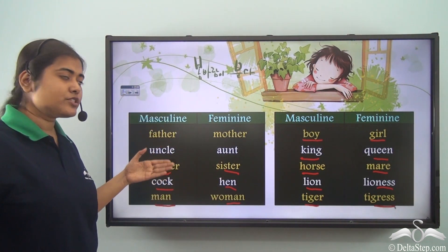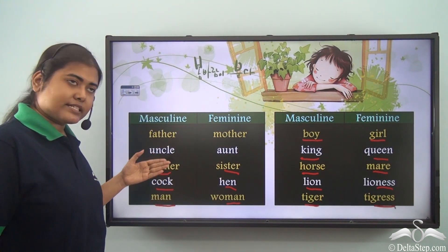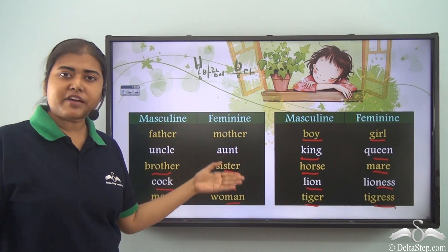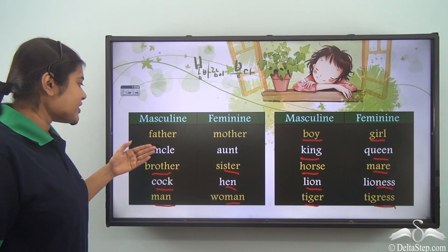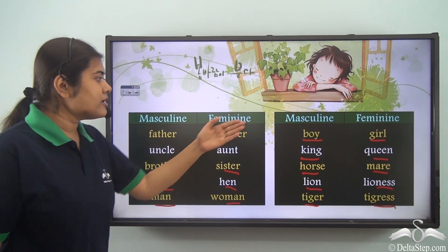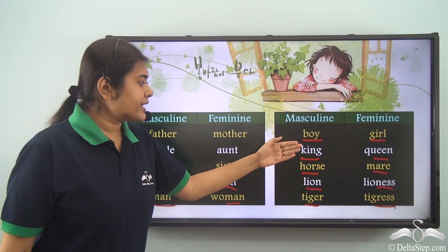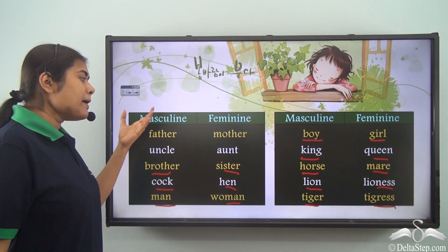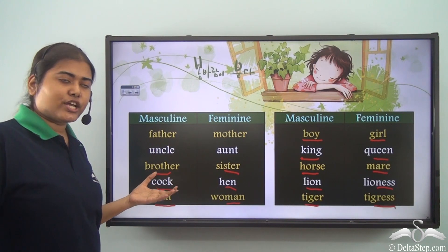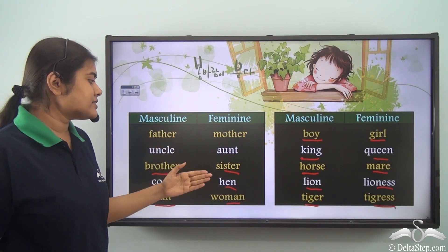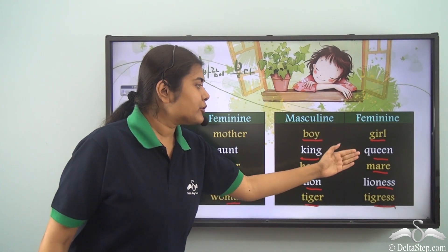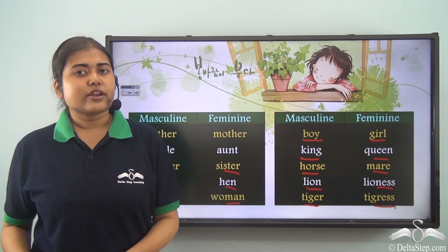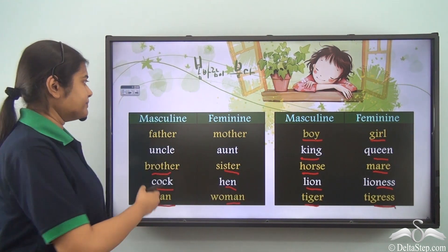We have different names for the masculine gender and different names for the feminine gender. Father, uncle, man, boy, king, horse, lion, and tiger are all used to refer to the masculine gender, whereas mother, aunt, sister, hen, woman, girl, queen, mare, lioness, and tigress are used to refer to the feminine gender.